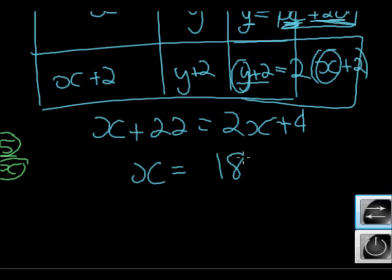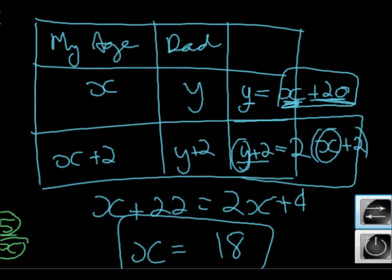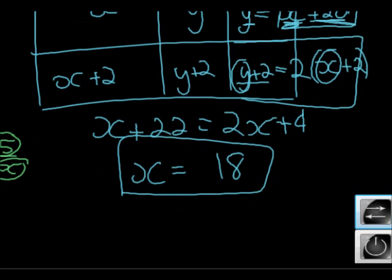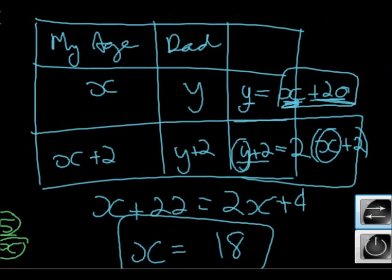x is 18. So how old is my dad now? That's how old I am now. So if I replace this y with an x plus 20, I will get x plus 20 plus 2 is 22. So how old is my dad now? 38. Because this is how old I am now, my dad is 20 years older than me. So he's 38.